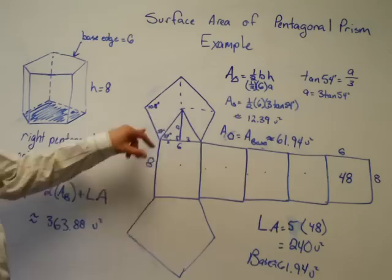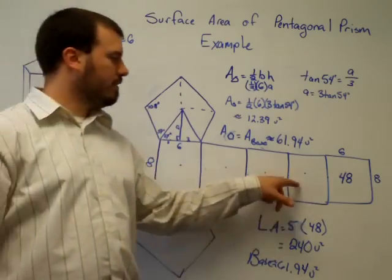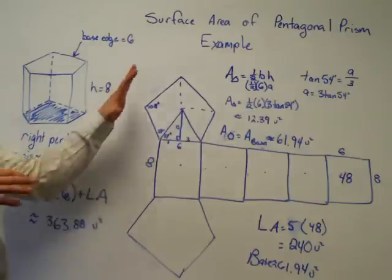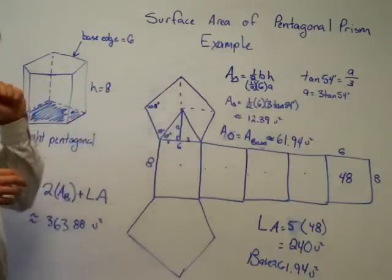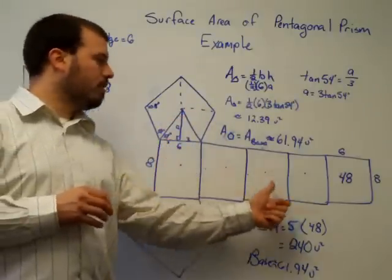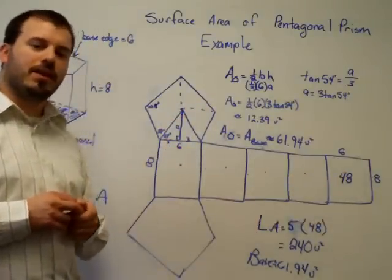And then two areas of the bases, plus the lateral area, gives the total surface area of a pentagonal prism. So just in summary, finding the area of a pentagonal prism, or any prism, draw a net for the figure, find the area of all the different shapes, and add them together.